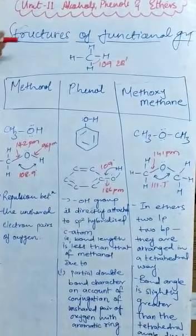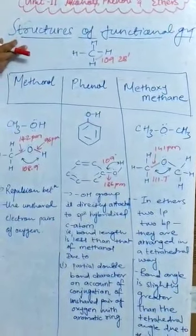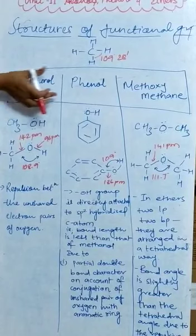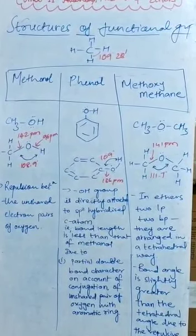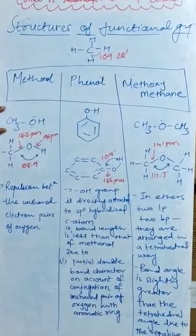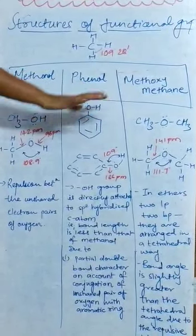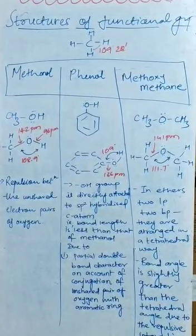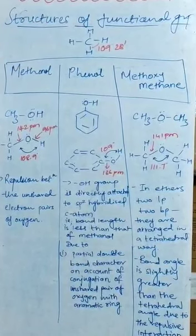Good morning. Today we are moving with structures of functional groups. We are going to see methanol, phenol, and methoxy methane in context with methane — specifically bond angle and bond length. Here is the structure of methanol (CH3OH), this is the structure of phenol, and this is the structure of methoxy methane. I have shown you the comparison in context with methane.